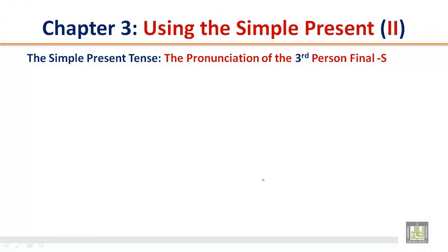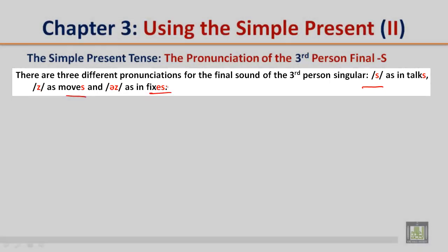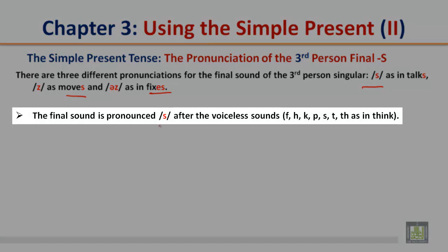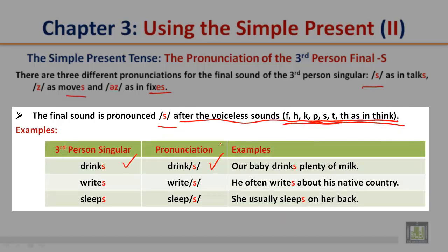The pronunciation of the third person final S. There are three different pronunciations: as in 'talks', as in 'moves', and as in 'fixes'. The final /s/ sound is pronounced after voiceless sounds F, H, K, P, S, T, TH (as in 'think'). For example: 'drinks' — our baby drinks plenty of milk. 'Writes' — he often writes about his native country. 'Sleeps' — she usually sleeps on her back.